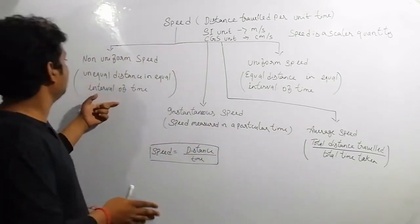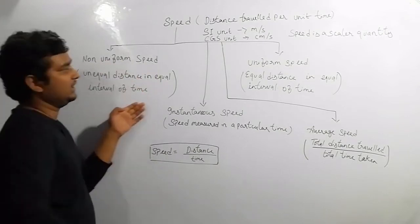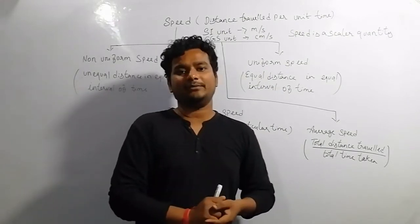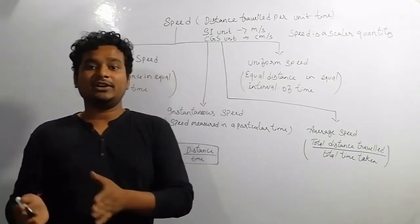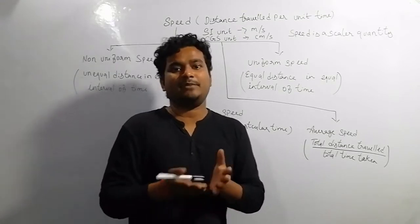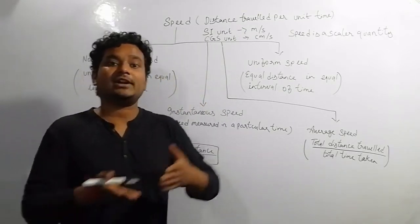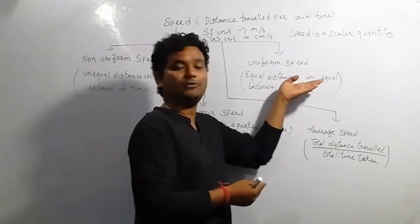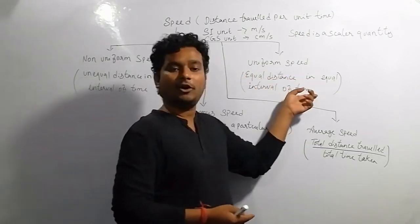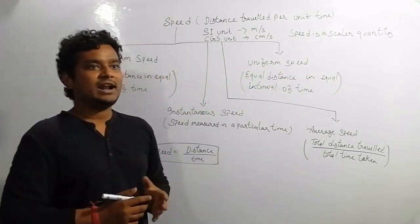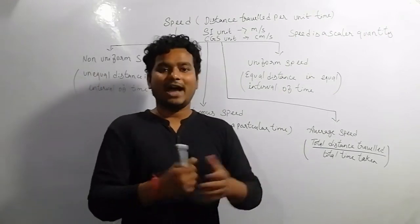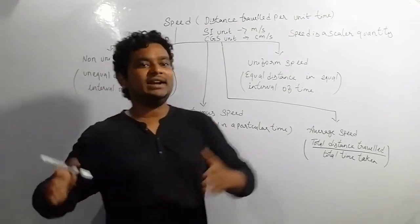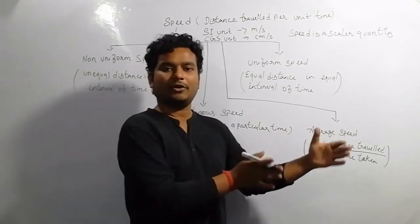Now, uniform speed means equal distance in equal intervals of time. For example, in the first second we traveled 5 meters, and in the second second we also travel 5 meters — that is 5 meters per second, which is uniform speed. For example, when driving a car on a highway, we don't need to turn or apply brakes constantly, so we move at a uniform speed.